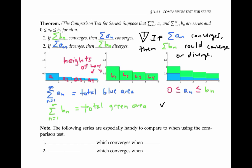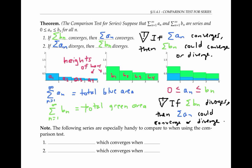Also, if the larger series of b sub n's diverges, then we can't conclude anything about the smaller series of a sub n's — it could converge or could diverge. When using the comparison test to establish convergence or divergence, it's handy to compare your unfamiliar series to a familiar series that you already know converges or diverges.